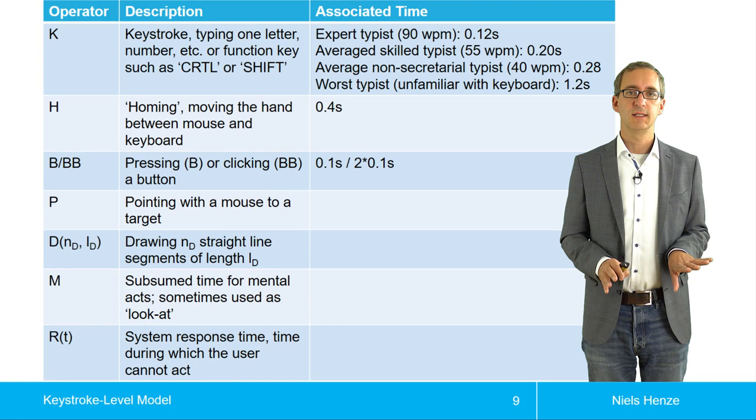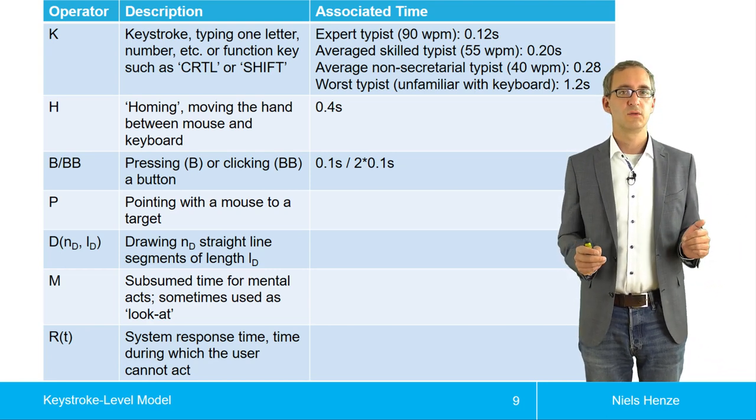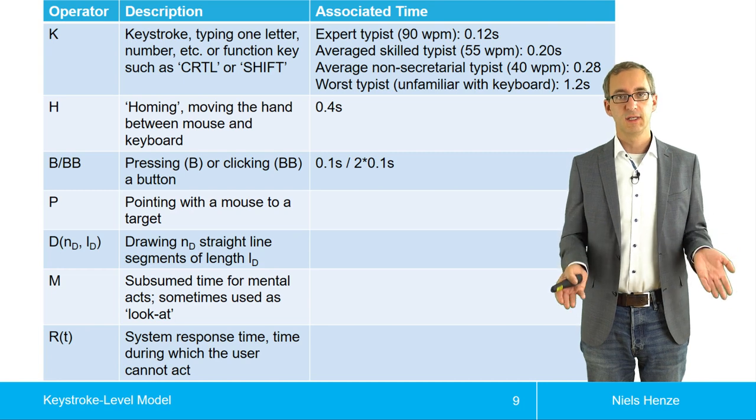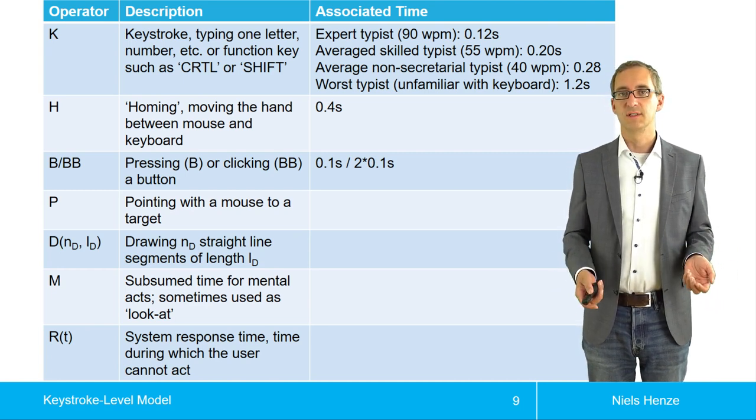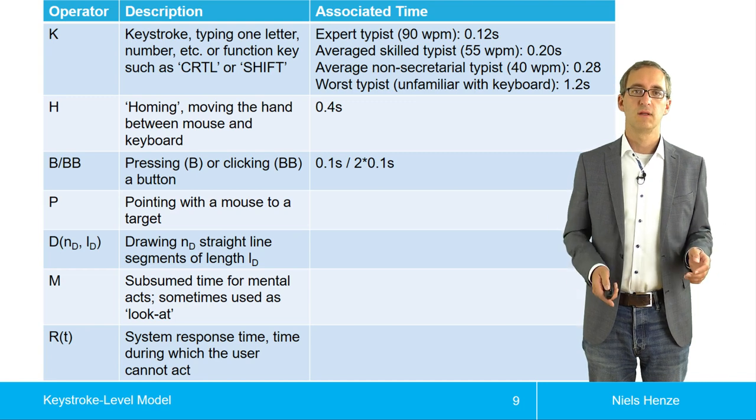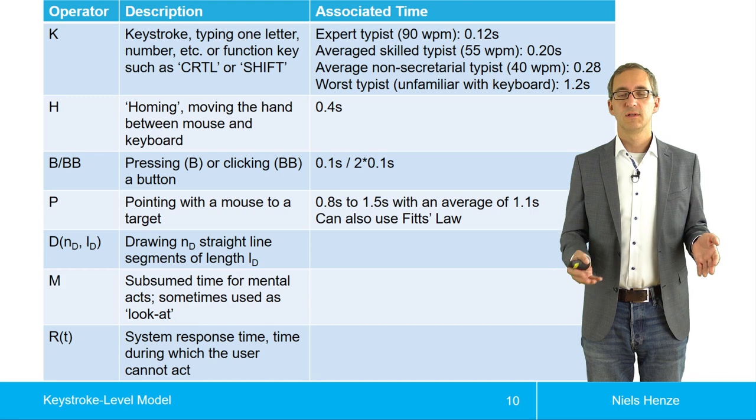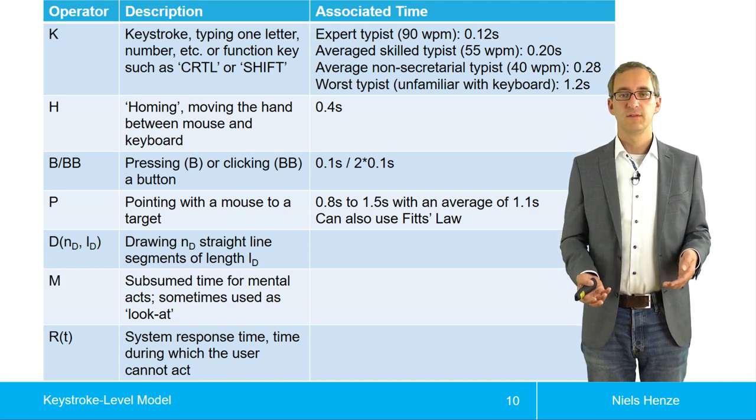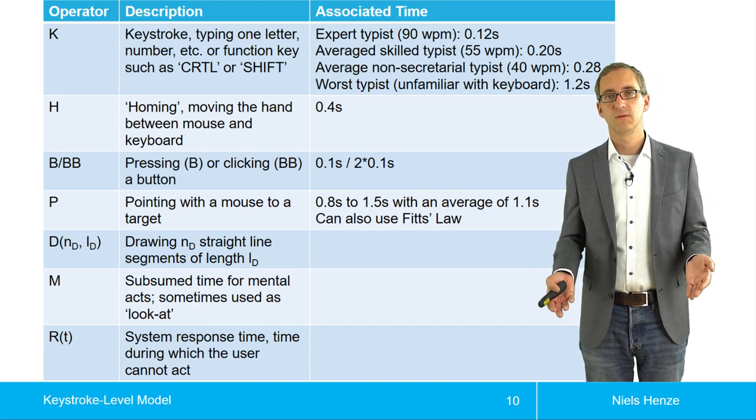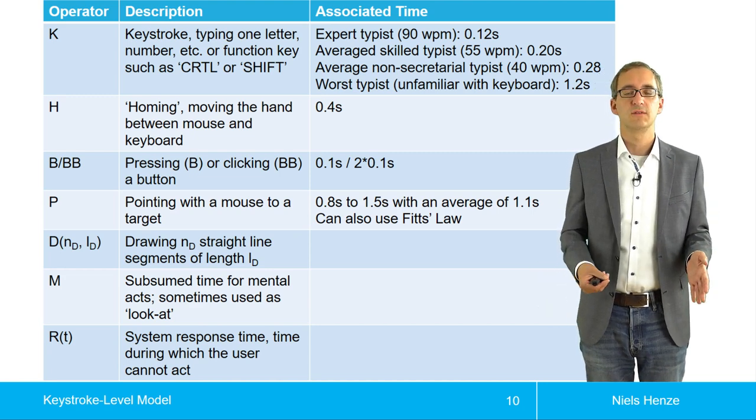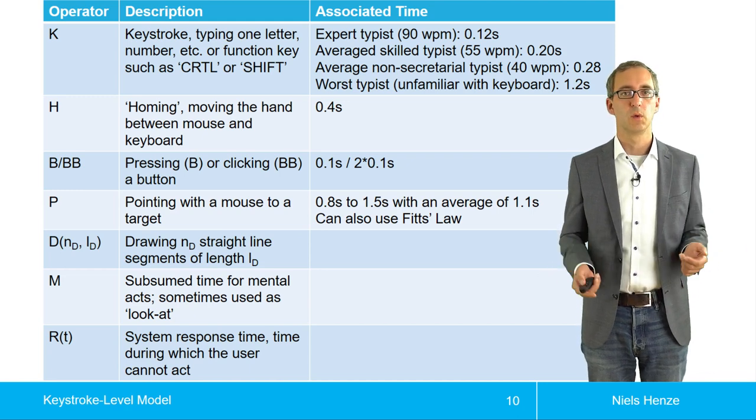The next one is the P operator. We might think, can't we use Fitts' law for that? We can, but often we don't want to deal with these things. So we just use a value which is a good average. It's considered 0.8 to 1.5 seconds with an average of 1.1 seconds. We can also use Fitts' law, but if we just want to have an idea how long it takes, then just take the average 1.1 seconds.